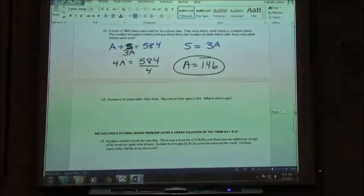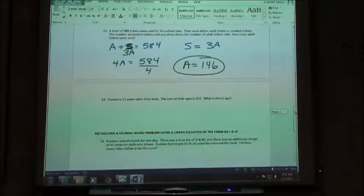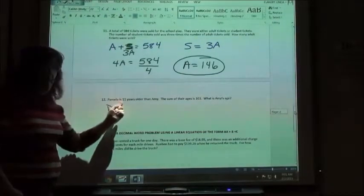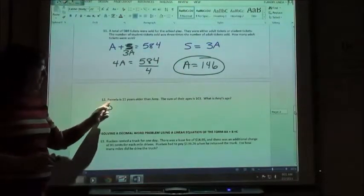So number 12 says Pamela is 11 years older than Amy. The sum of their ages is 103. What is Amy's age? So if I'm going to translate Pamela is 11 years older than Amy, how should I write that down? I'm going to add, and I'm going to start with, what should we use for Pamela? P sounds good to me. P is would be Pamela is.